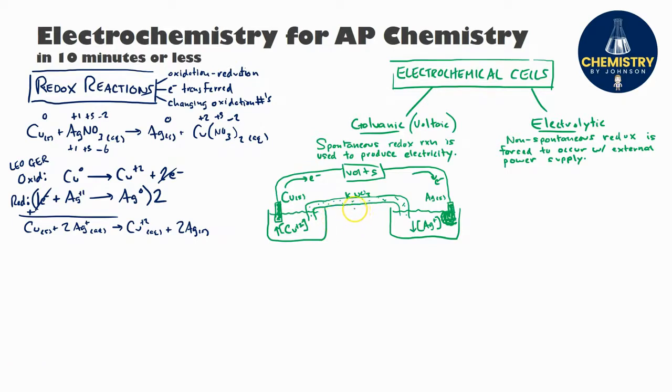In the salt bridge, we're going to have negative ions flowing in that same clockwise direction as the electrons, so in this case I'm going to have nitrate ions flowing to the left and the cations, in this case potassium, flowing in the opposite direction to the right.